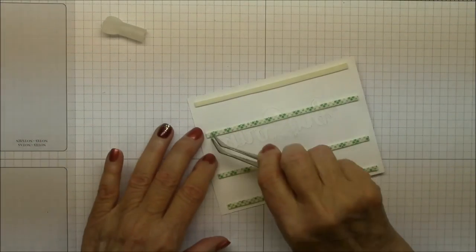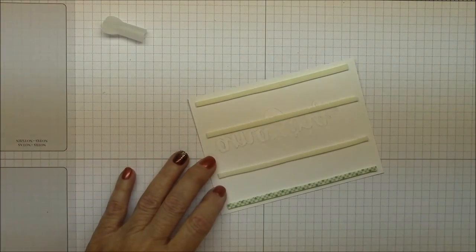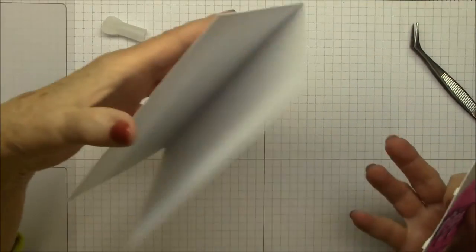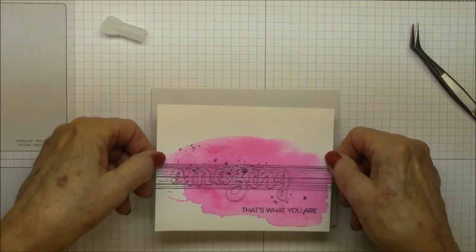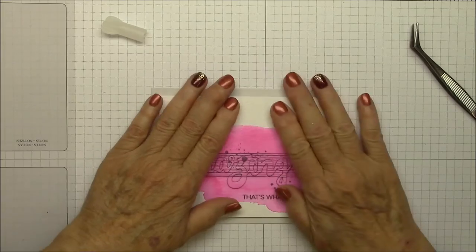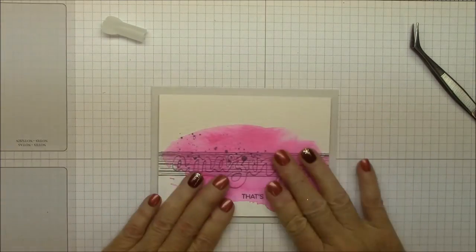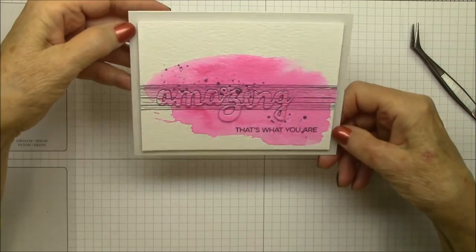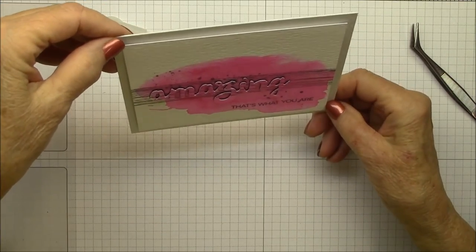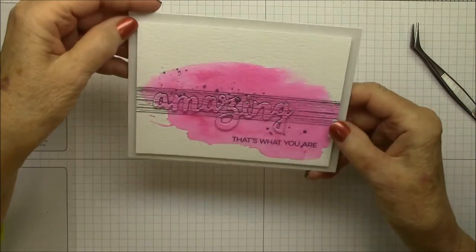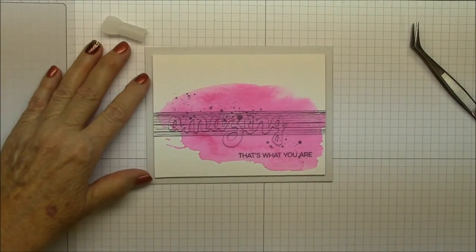So now, the next step will be to remove my backing from the tape. Put it onto my card base. And this is my favorite thing. This is stone gray card base. Nail that puppy down. And we're done. And I really love this technique and I hope you'll try it. Thanks so much for stopping by. See you again soon. Bye.